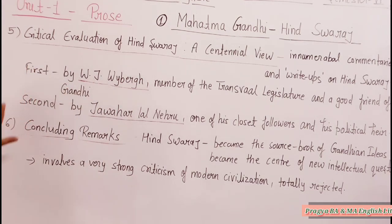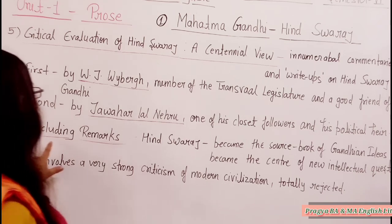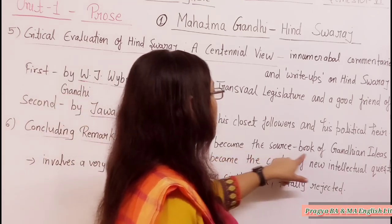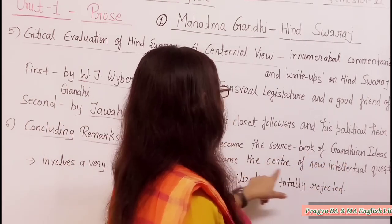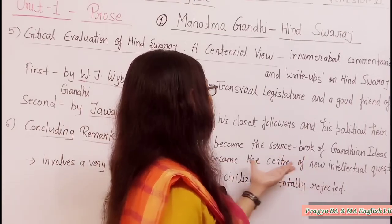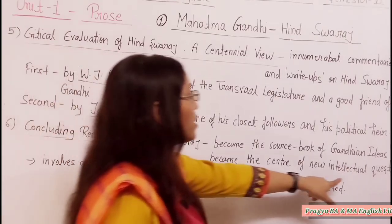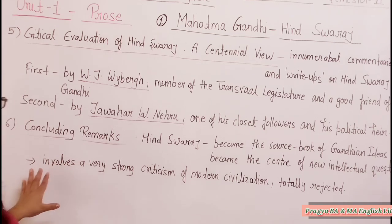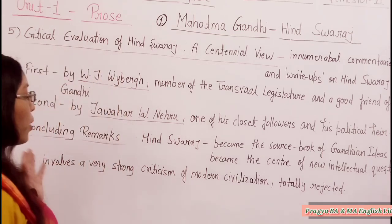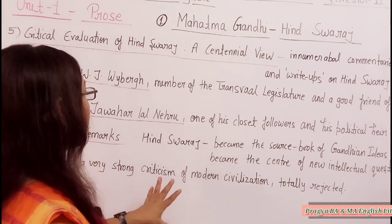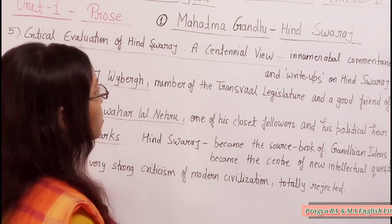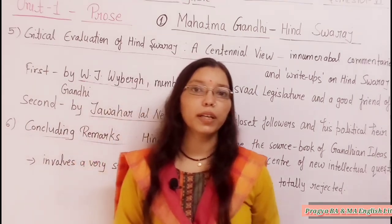So briefly I have covered these notes. The last topic is concluding remarks. Hind Swaraj became the source book of Gandhian ideas and the center of a new intellectual quest. It involves a very strong criticism of modern civilization, which is totally rejected. This is how Gandhi presented his ideas, and this book falsely — strongly — criticized modern civilization.